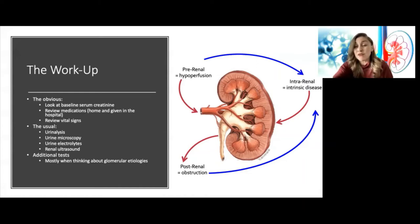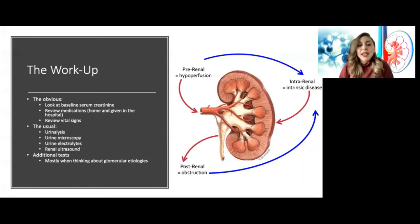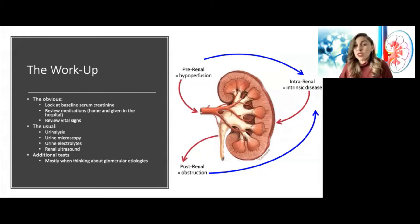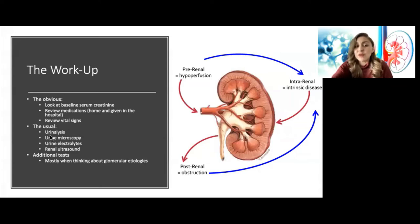The ultrasound helps determine whether a patient actually has chronic kidney disease rather than acute kidney injury. Additional tests — mostly blood tests like serologies — such as HIV and hepatitis panels are really only indicated for specific etiologies like rhabdomyolysis or biopsied-driven etiology. For the most part, we're going to get the majority of our information from the clinical history and urine tests.